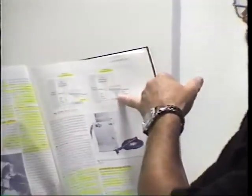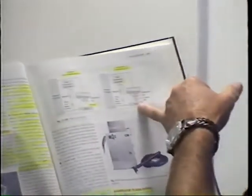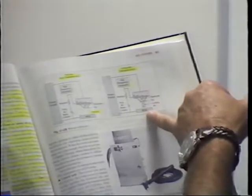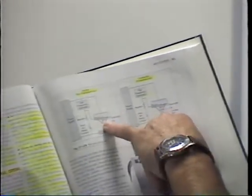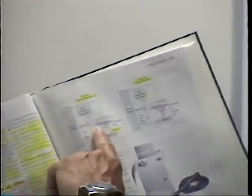In the transferred arc, it comes out of the tip and goes right down to the work — that's transferred, jumping that gap across there. In non-transferred, you can see it comes from the tip and arcs out against the cup itself, generating heat but not actually transferring the arc to the workpiece. In the cutting process, we use the transferred arc.